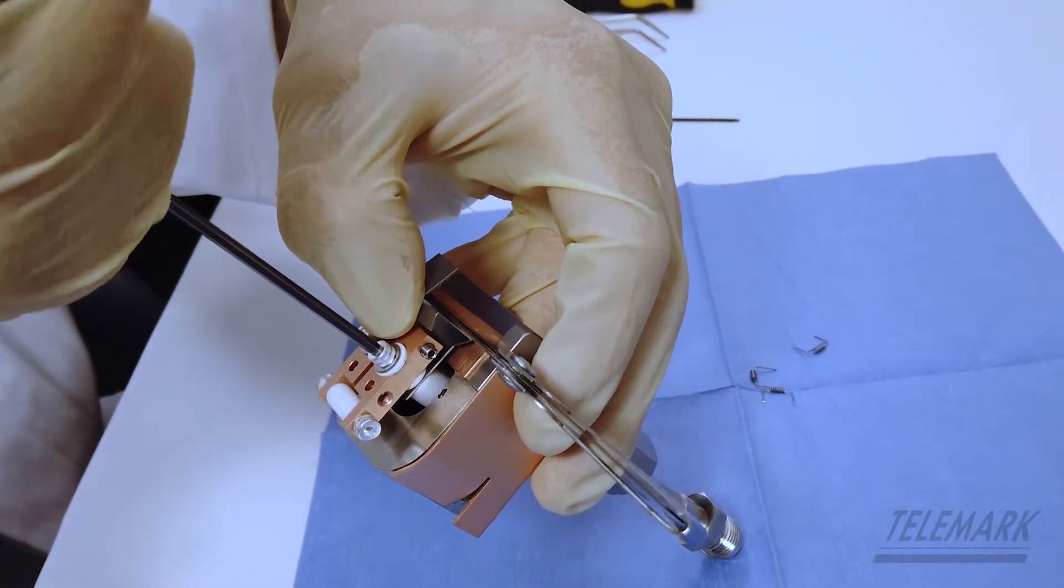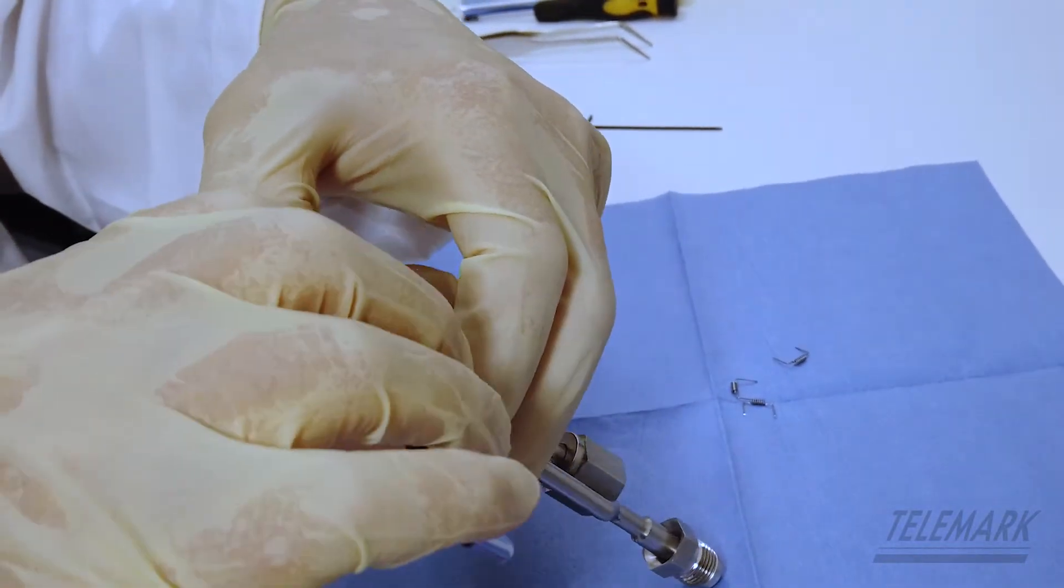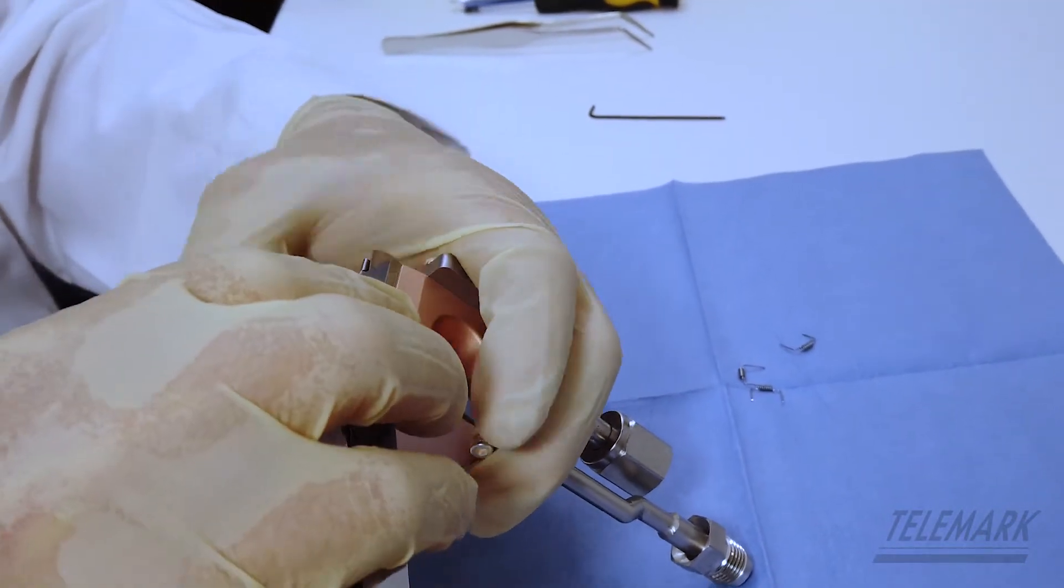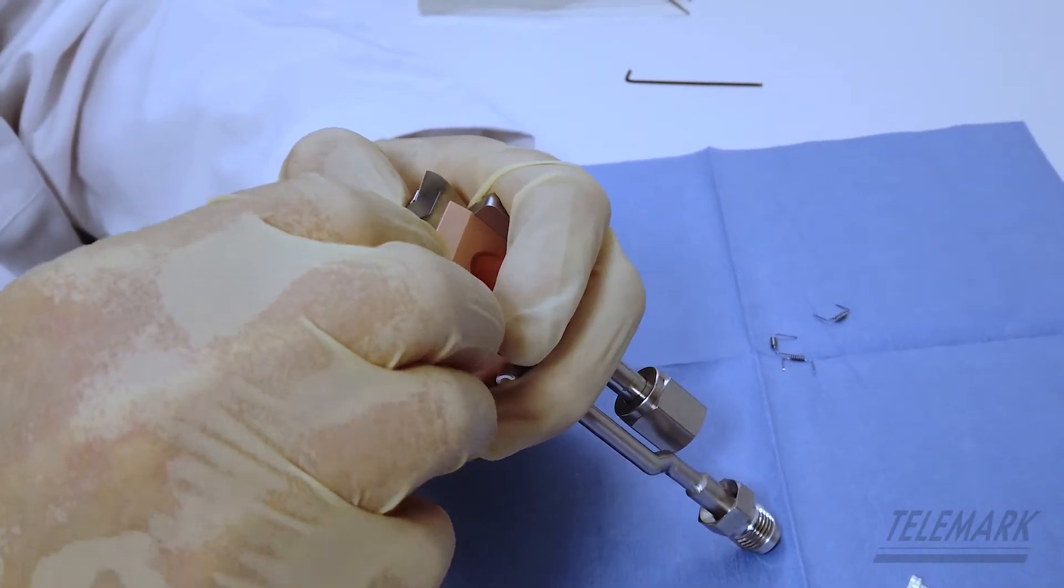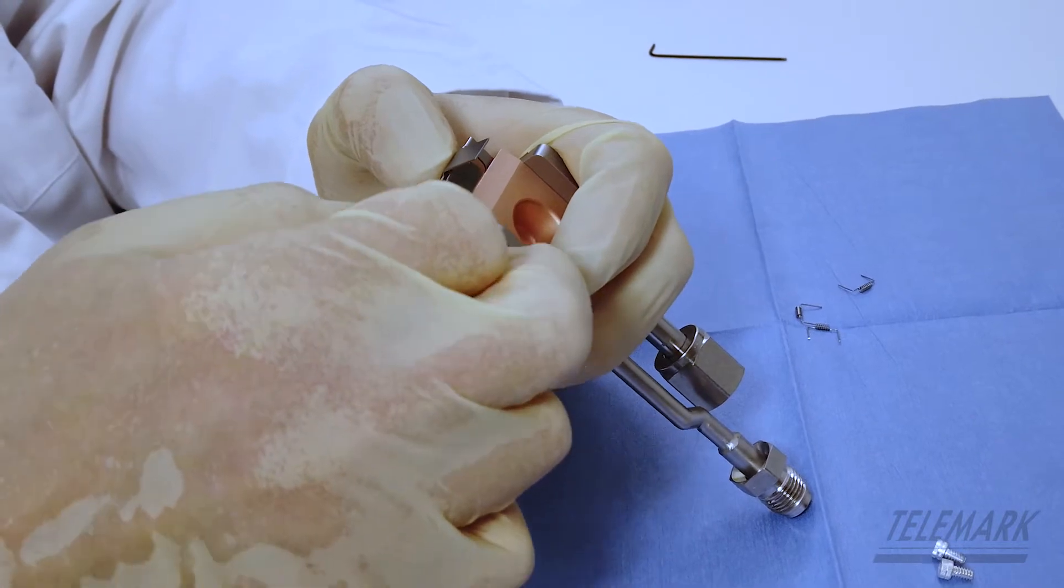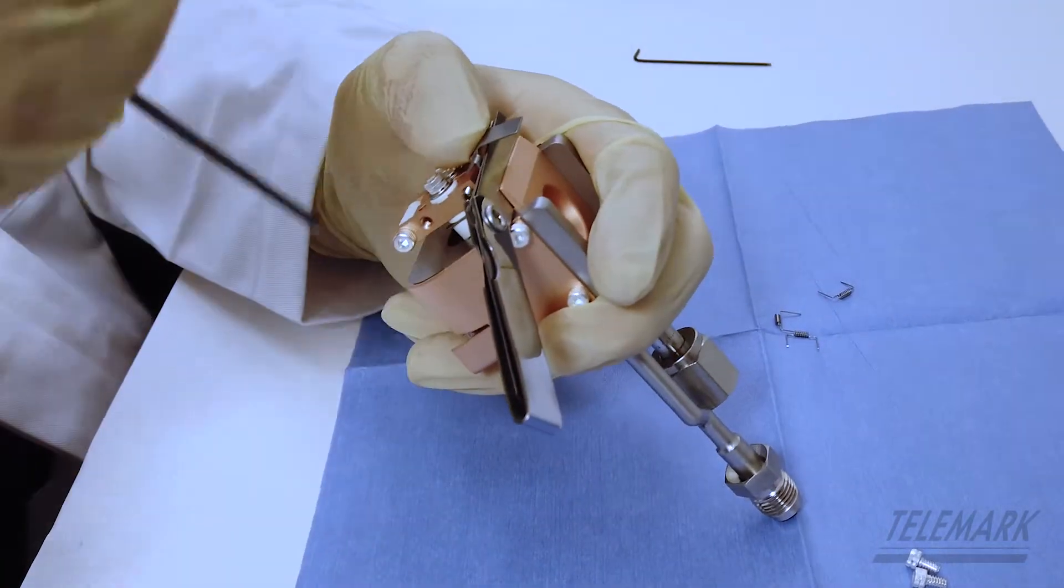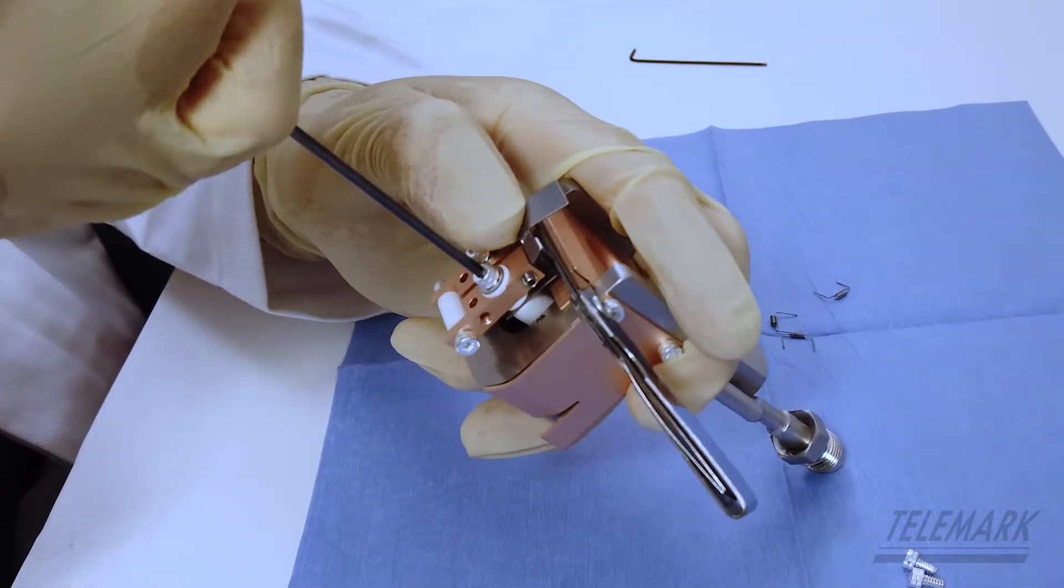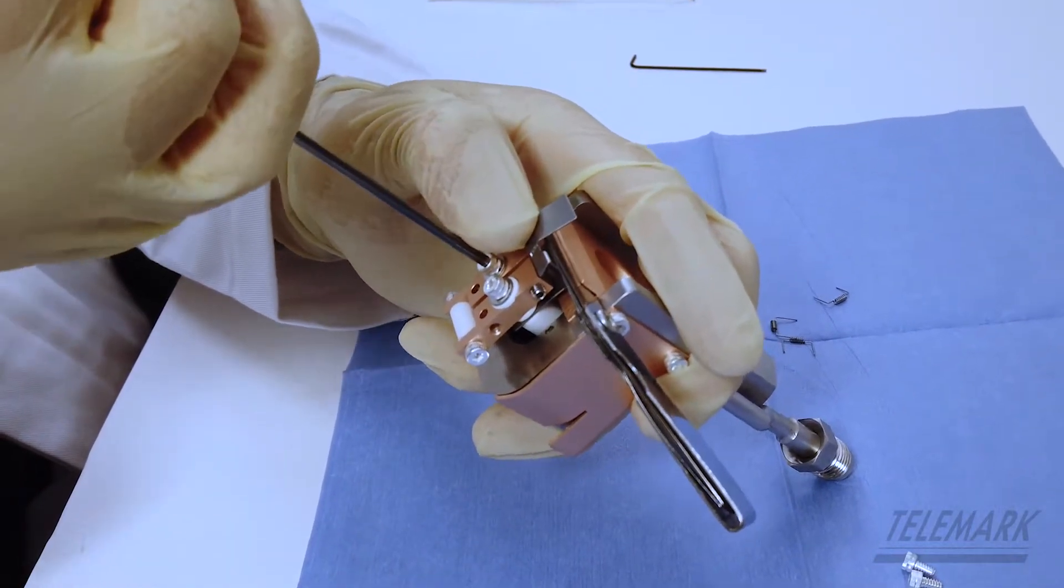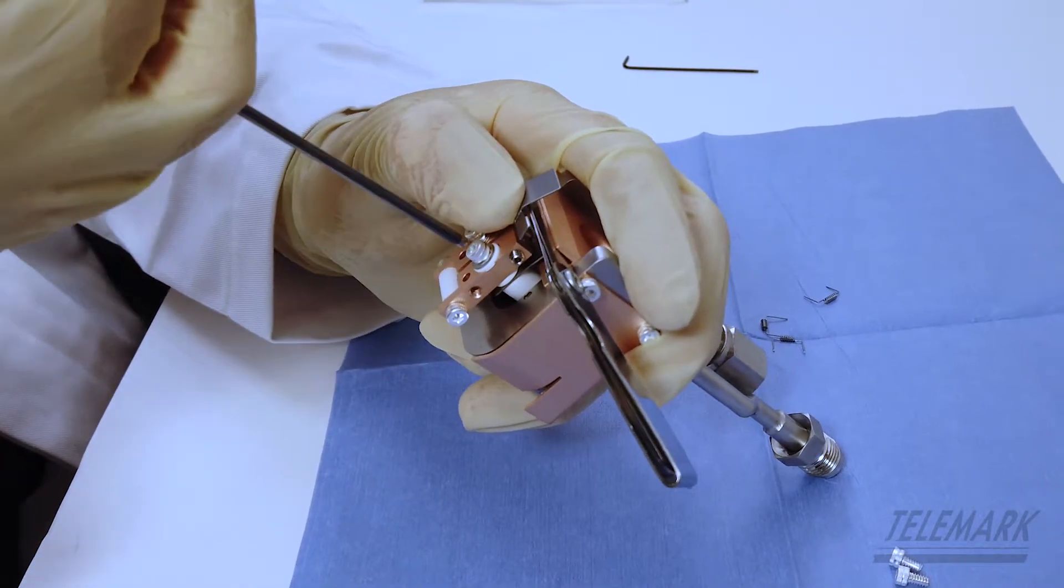Snug them down a little bit. Snug them down a little bit. Check the gapping. It's not quite good there. Let's try that some more. I want that 60 thousandths. Back it out a little bit.